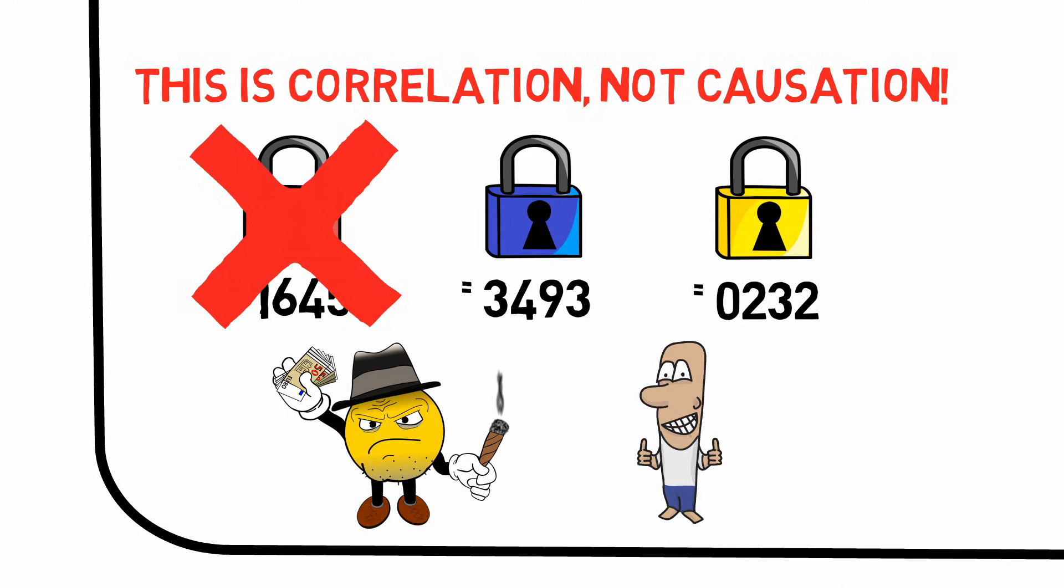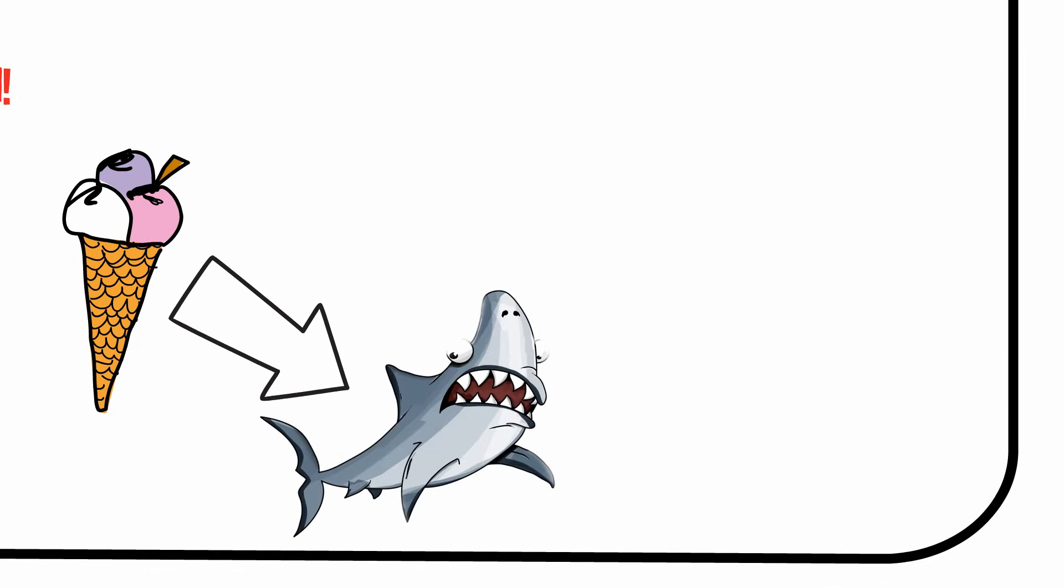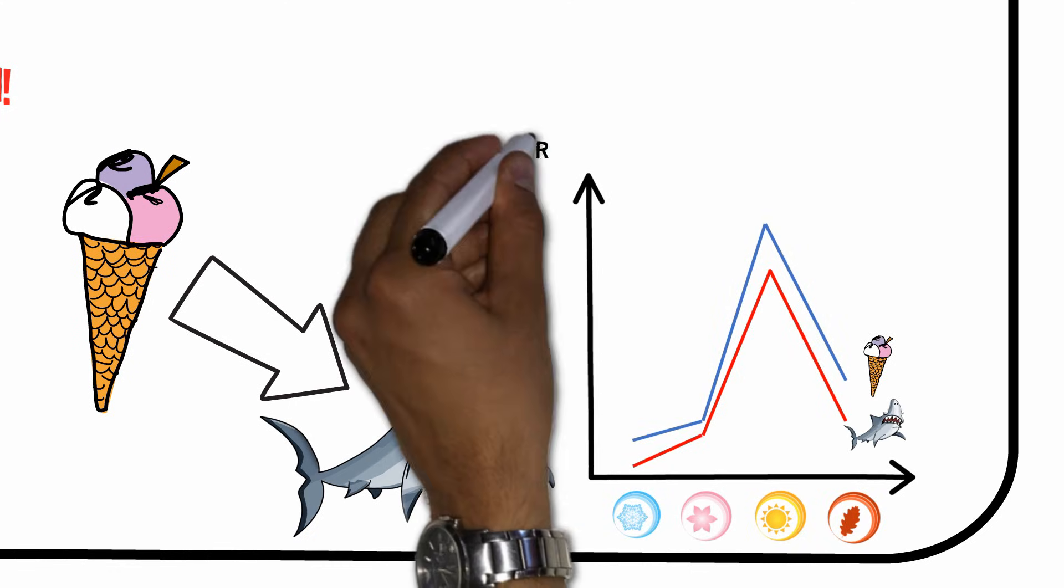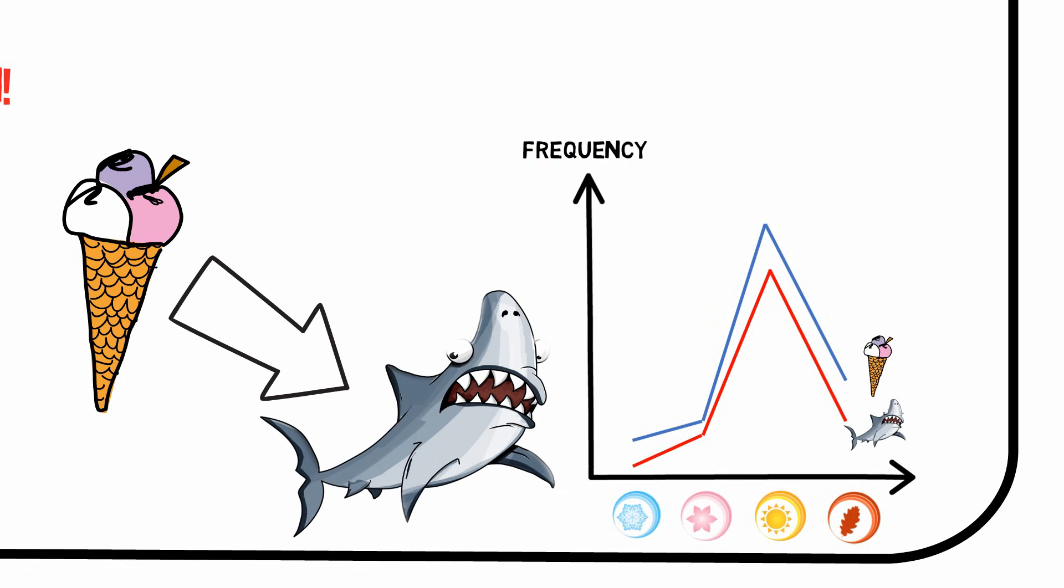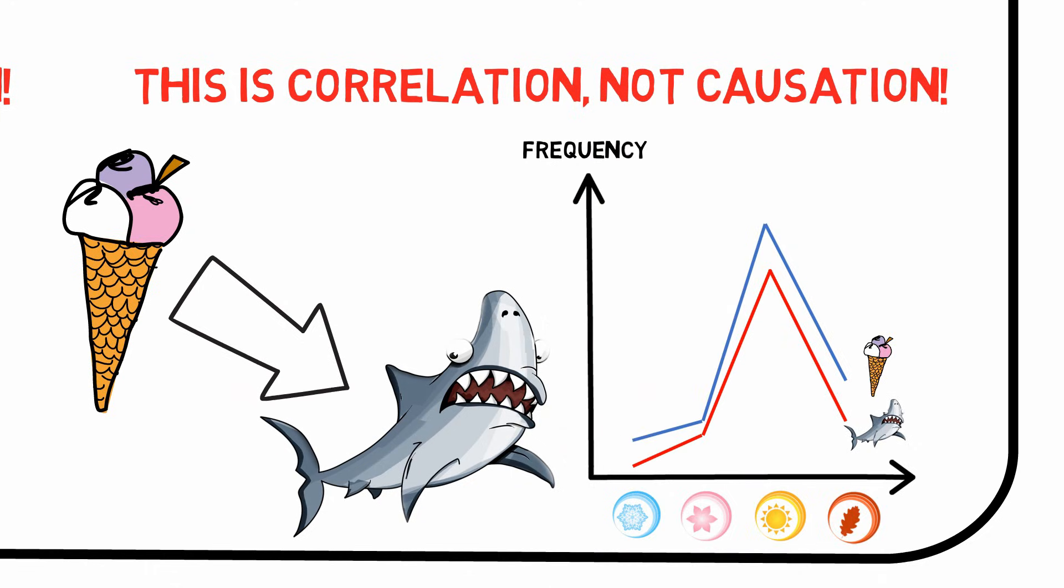Let's take another example. Is it true that consumption of ice cream causes shock attacks? Well, from this chart, you may come up with that conclusion, as it's quite clear that shock attacks increase whenever the ice cream consumption does. But obviously, there's no causal relationship here. The ice cream consumption does not cause shock attacks. It's just that both swimming in the ocean, which makes us more likely to get attacked by a shark, and eating ice cream is more enjoyable in the summer.